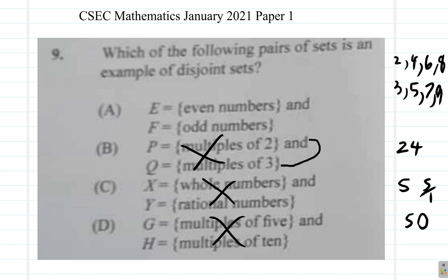Clearly, you do not have any even number that is also an odd number. So the answer here, question 9 answer is A.